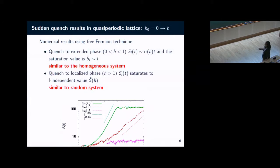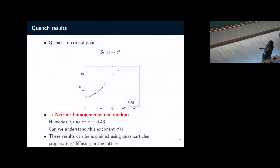On the other hand, if you quench it to the localized phase, we see that the entanglement entropy saturates and there is no linear behavior or increase. Something special happens when you quench it to the critical phase of this model. It is not going linearly with time, but what we observe is that when you quench it to the critical point, that is when h is equal to 1, the entanglement entropy increases as t to the power sigma with the obtained value equal to 0.43.